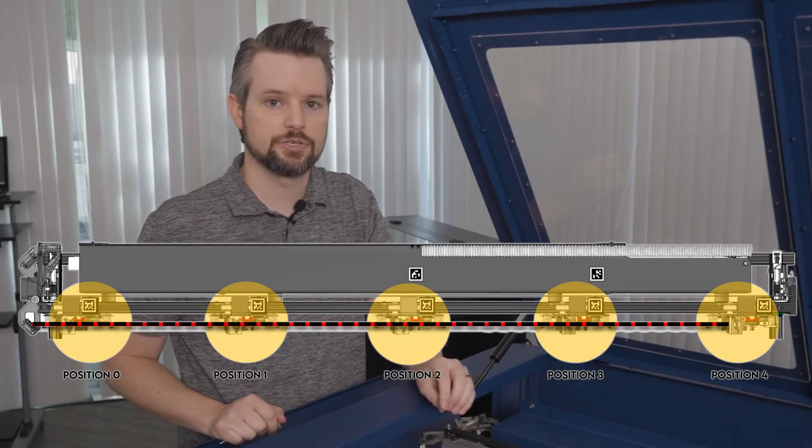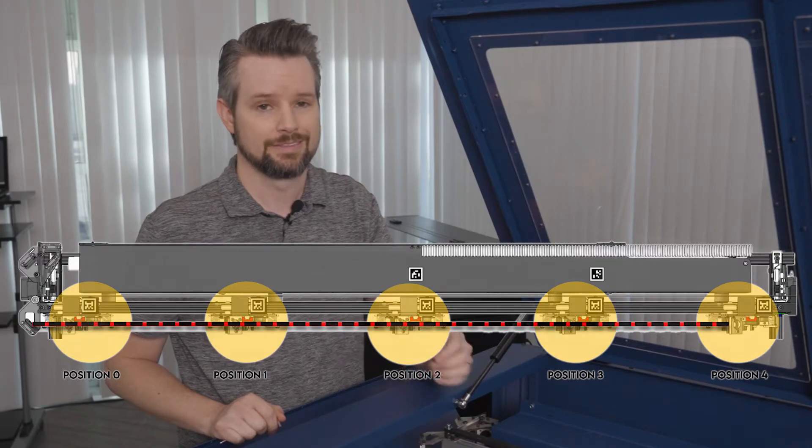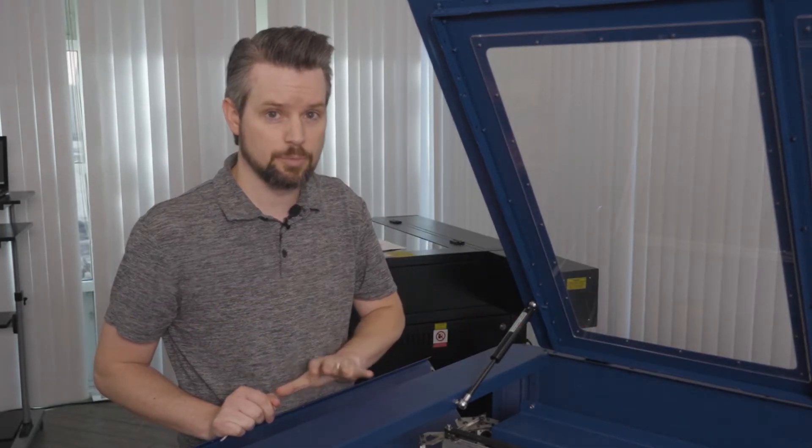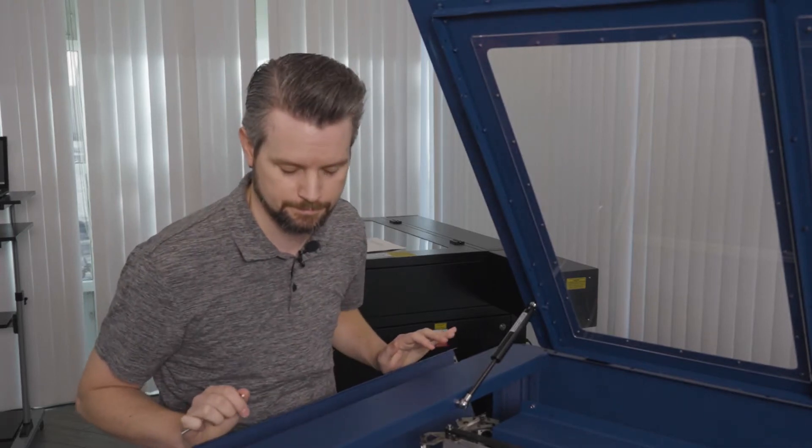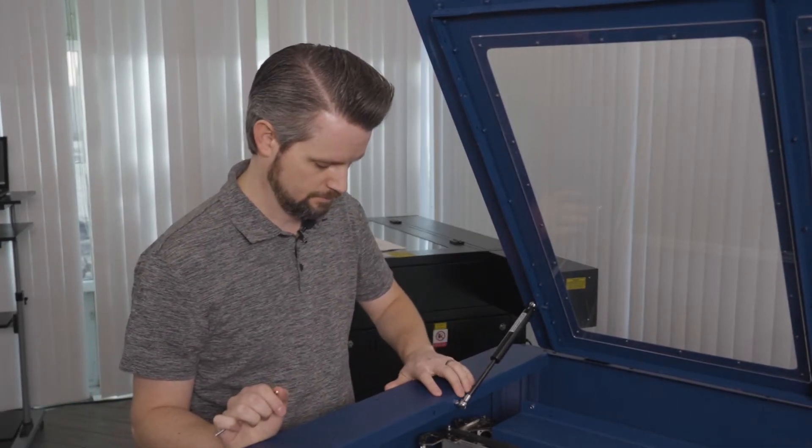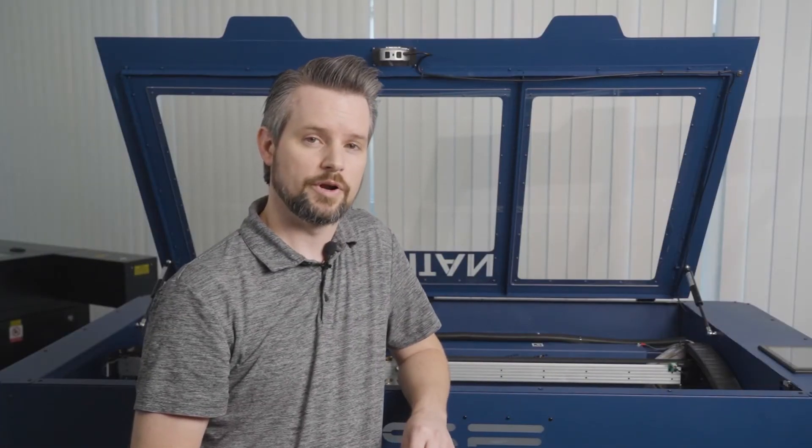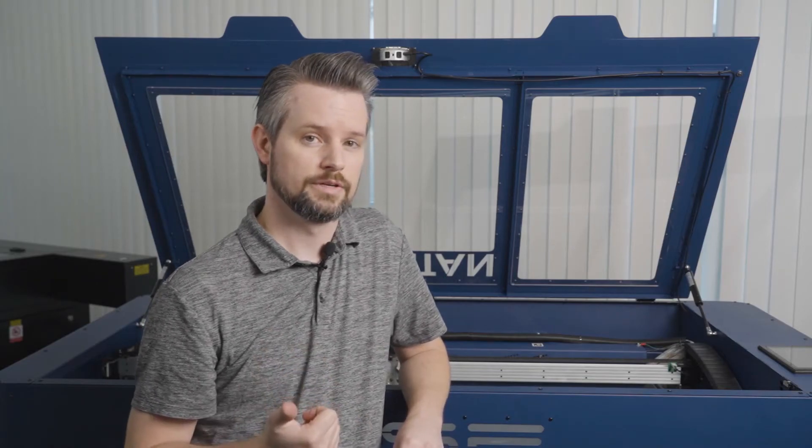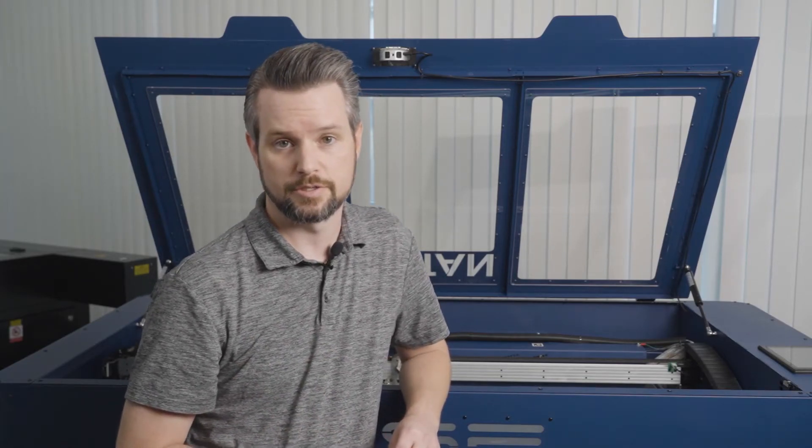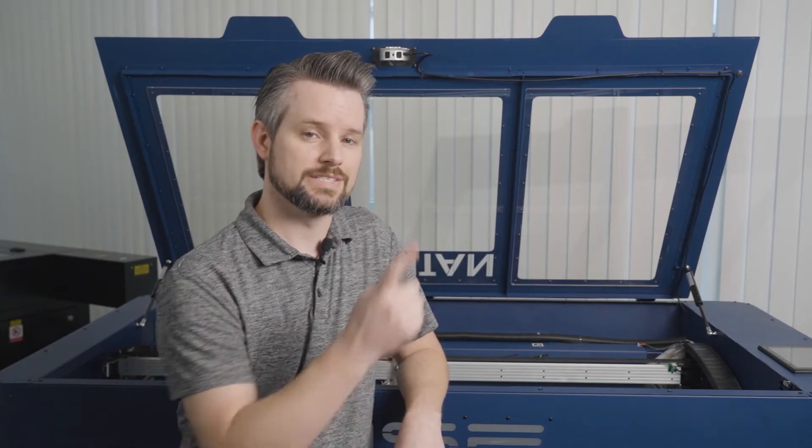At this point, the beam should be aligned to the center of mirror three, the entire length of the gantry. We no longer need this side open so you can close it now. At this point, we are completely finished aligning mirror one, two, and the red diode, so you do not need to touch those again. Now we're going to move on to the z-axis. You'll need a piece of thermal paper.